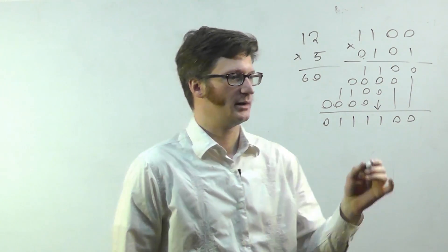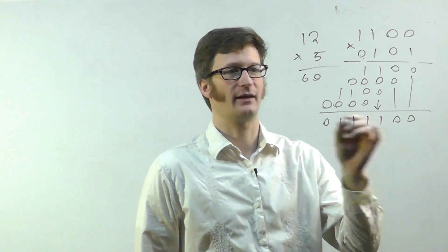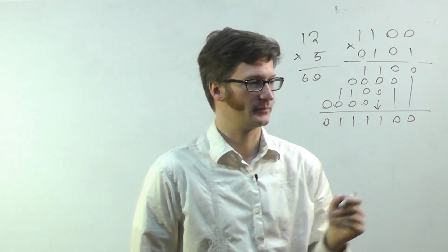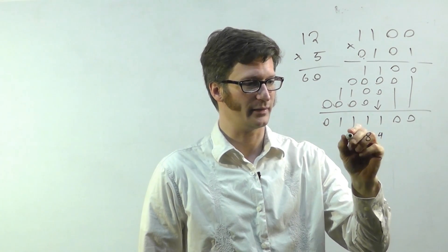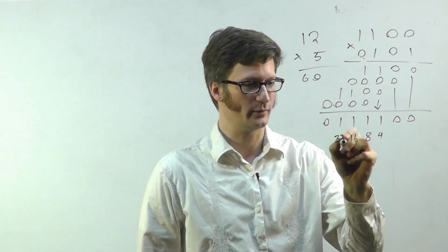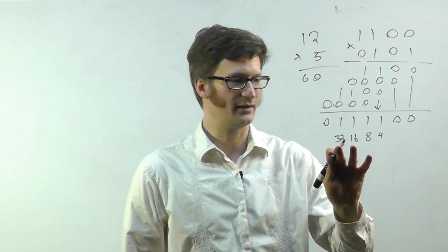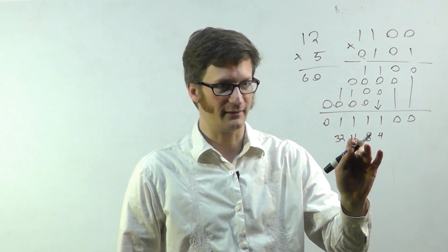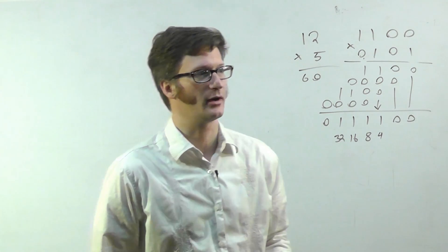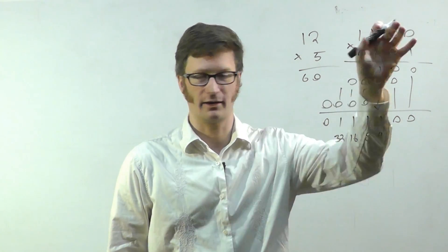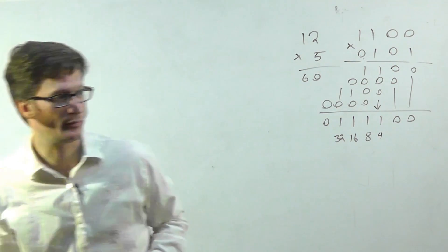Okay, so let's verify. All right. So this is one, two, four, plus eight, plus 16, plus 32. 32 and 16 is 48, plus eight is 56, plus four is 60. So there we go. This is 60 in binary, and we just showed how to multiply that out.